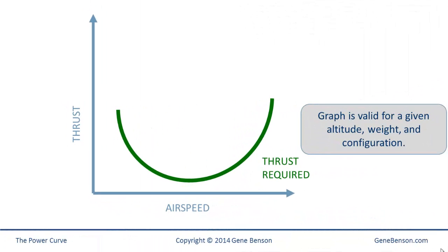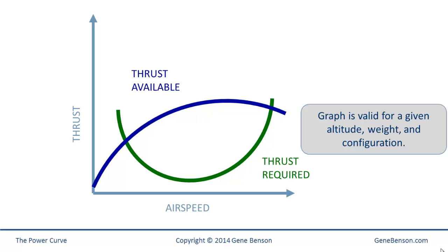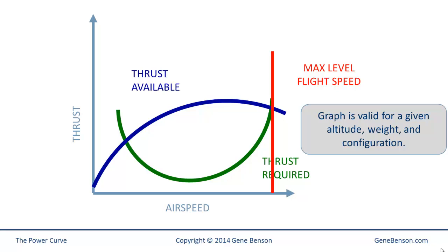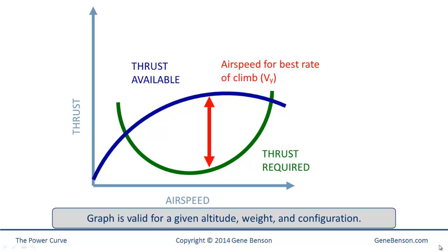Simplifying the graph to show just the total drag curve, we can add a thrust available curve — this is for a fixed pitch propeller, which has its particular shape due to differences in propeller efficiency at different airspeeds. The power-on stall speed is found at the lower speed where the curves cross. The curves cross again at a higher airspeed, which is the maximum level flight speed — not the red line speed, but simply how fast the airplane will go in level flight at full power. Best rate of climb airspeed, V sub Y, occurs at the airspeed where maximum power is available, while best angle of climb airspeed, V sub X, occurs where maximum thrust is available, though there are other variables such as the angle of the thrust line.